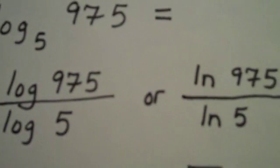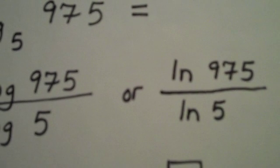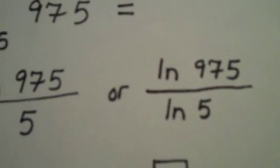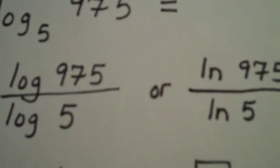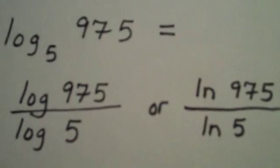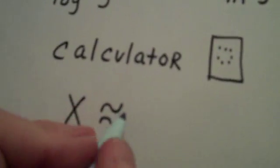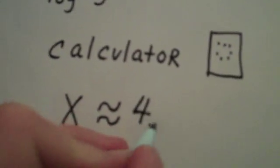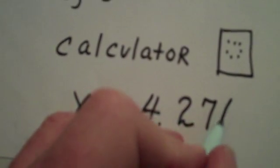Okay, so I'm going to type in log of 975, I'm going to close the paren, divided by log of 5, close the paren, and hit enter. And I come out with the answer, 4.276.